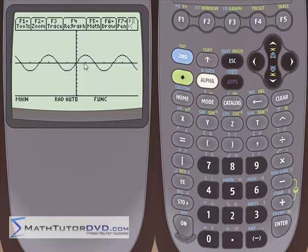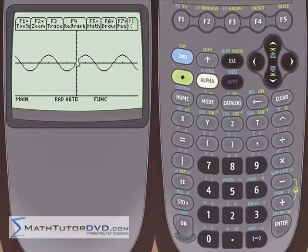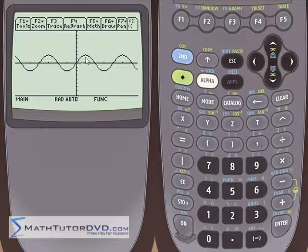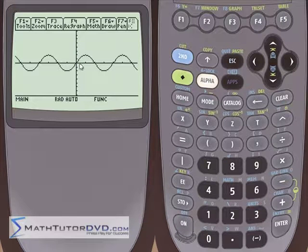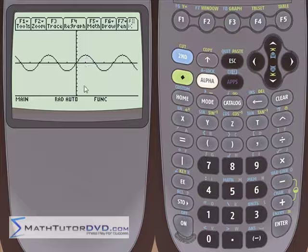When we talk about functions that have peaks that are rounded like this, we call this part of the function concave downward because it's concave and it opens facing down. The open part of the cave, so to speak, is facing down.